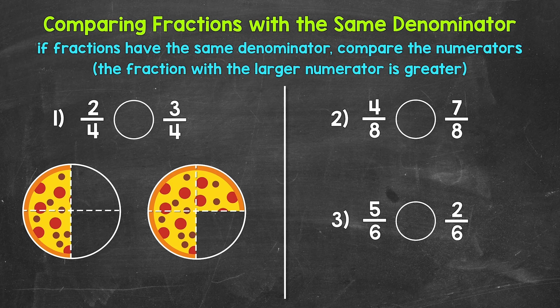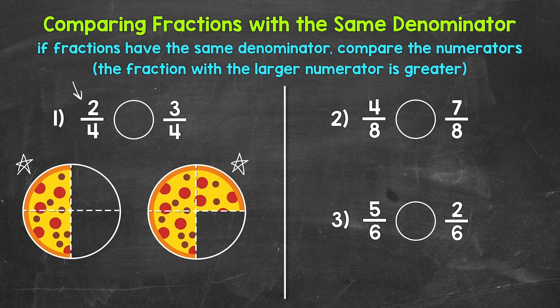Looking at number one, we have two pizzas to help us understand this. Both pizzas are the same size, and both are divided into four equal pieces, so our denominator is four. We are looking at what fraction of each pizza is left. For the pizza on the left, two pieces out of the four total pieces are left — that's two-fourths. For the pizza on the right, there are three pieces out of the four total pieces left — that's three-fourths. We can see that three-fourths is more than two-fourths. Three-fourths is greater; there's more left of the pizza on the right.